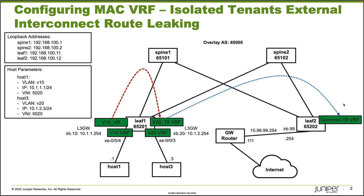The V20 T5 VRF connects into the Common T5 VRF on Leaf 2 — that's your normal T5 VRF connection. What's a little special is the V10 VR: traffic from Host 1 destined for something outside that subnet goes into the V10 VR, and then through route leaking we send that traffic to the V20 T5 VRF, which can then reach Leaf 2 and the Common T5 VRF. From there it can go to the gateway router and then to the internet.